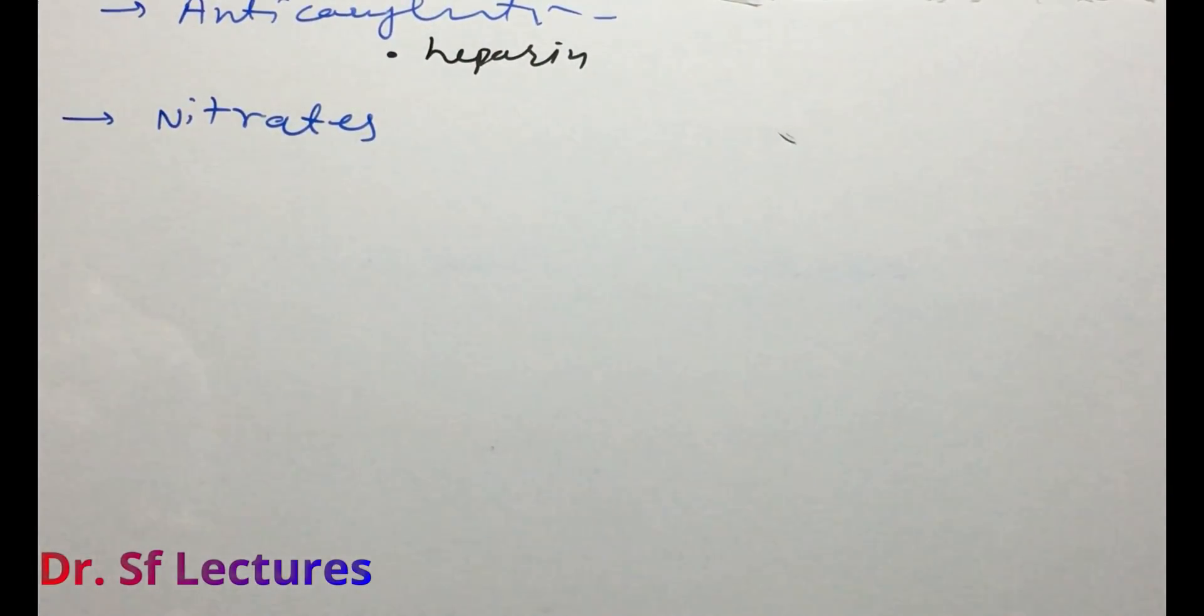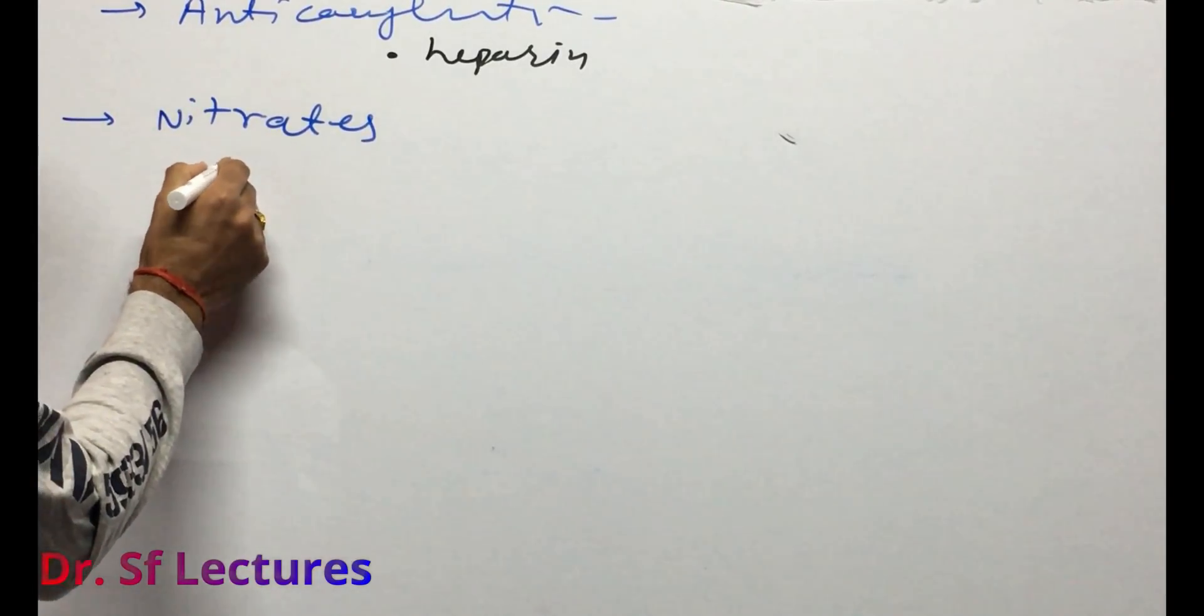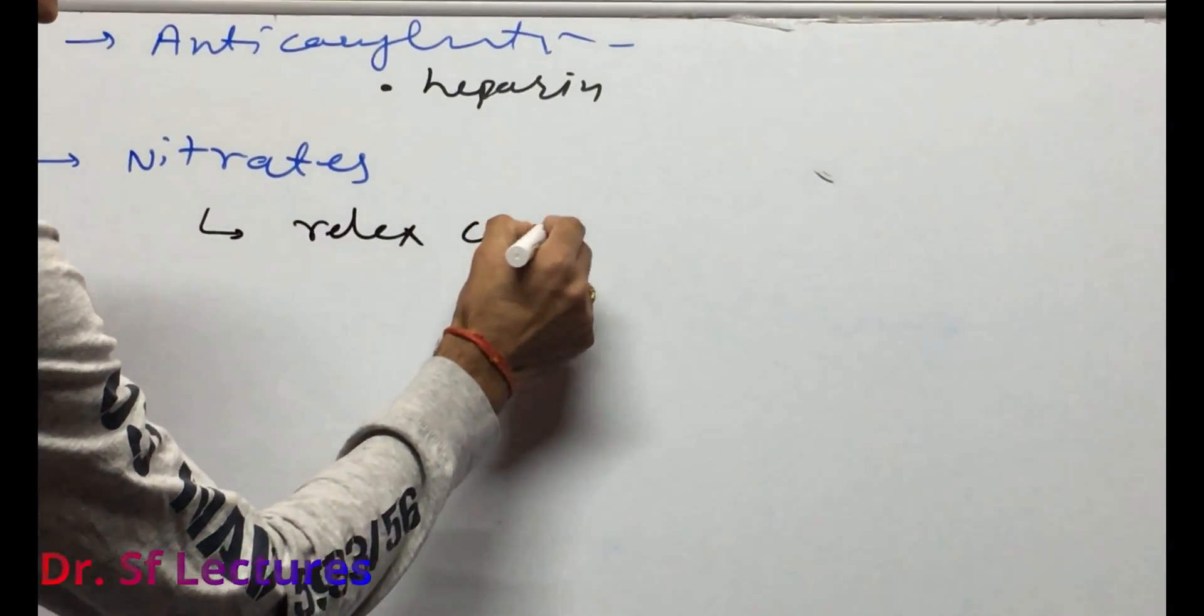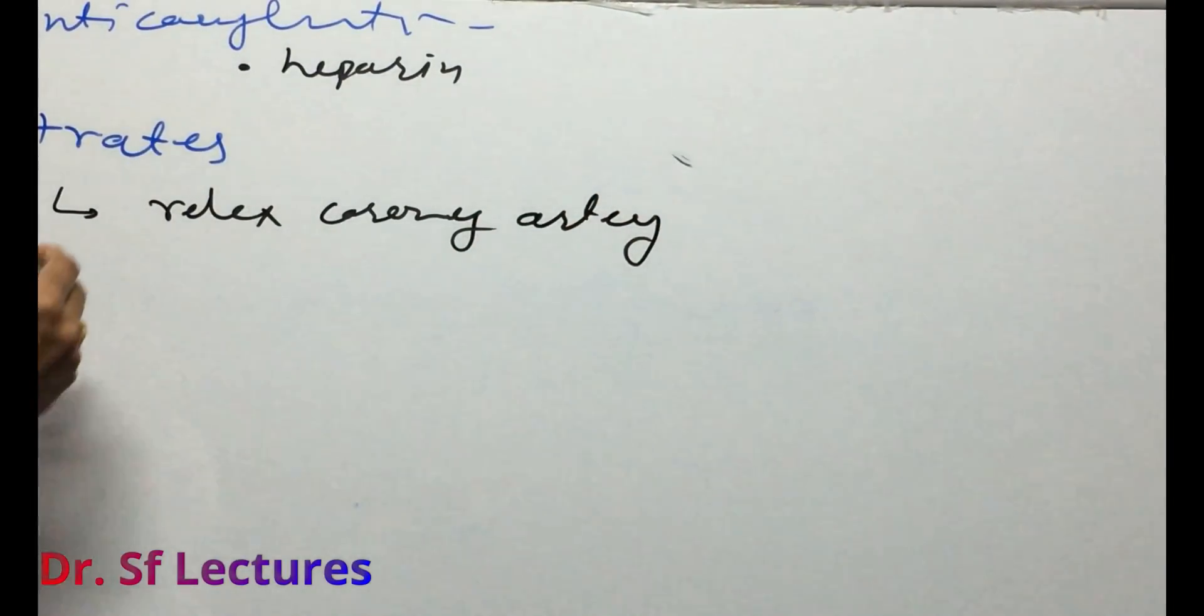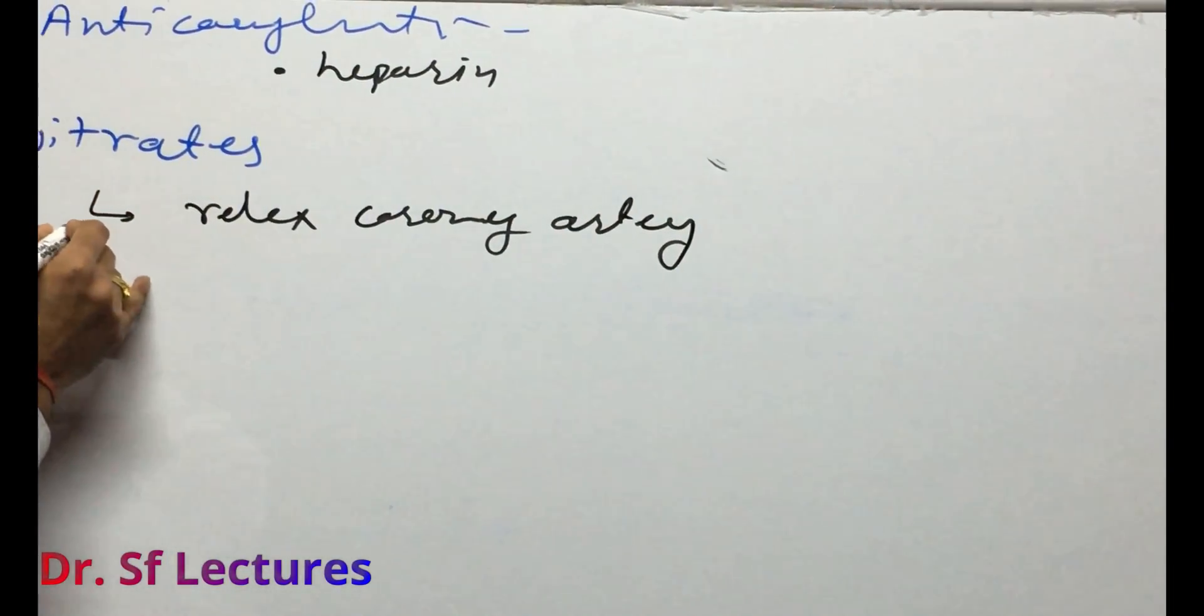Next we can use nitrates. Tell me what nitrates do in our body? They relax coronary artery and help in preload.